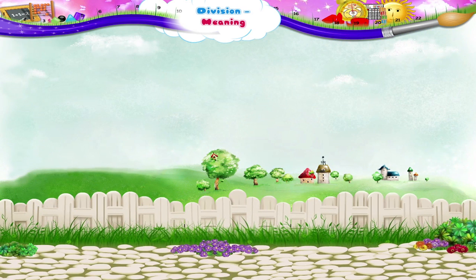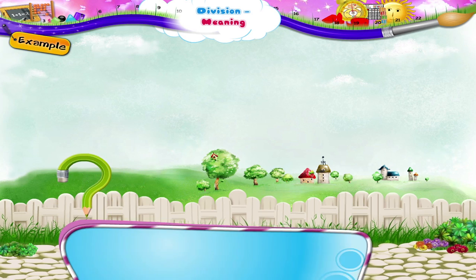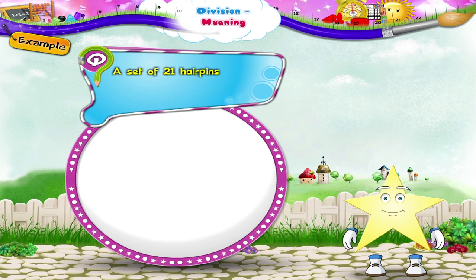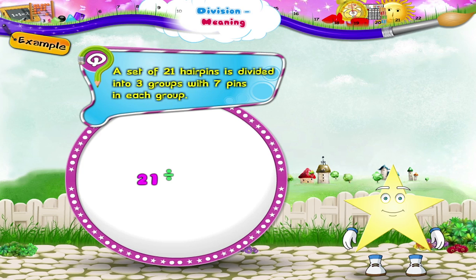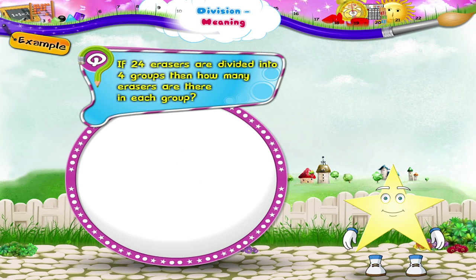Now let's write a few examples without using pictures. A set of 21 hairpins is divided into 3 groups with 7 pins in each group. So 21 divided by 3 is equal to 7. Here is the next one: if 24 erasers are divided into 4 groups, then how many erasers are there in each group? 24 divided by 4 is equal to 6. So there are 6 erasers in each group.